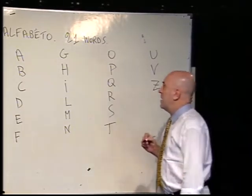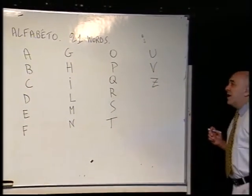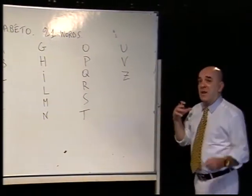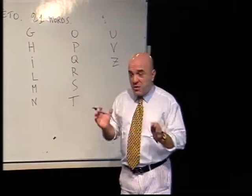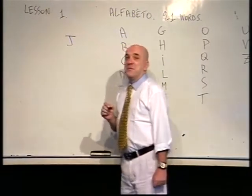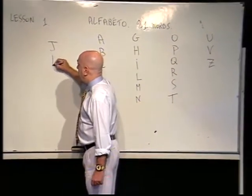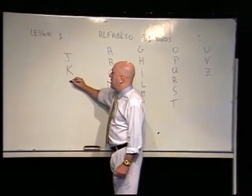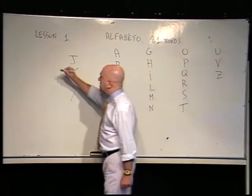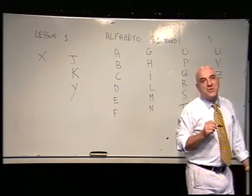These are the Italian alphabet. As you can see, we don't use some letters that you use in English or in other languages, such as the letter J — no Italian words will be found with J — or the letter K, or the letter Y, or the letter X as well. You will never find any word using these letters.